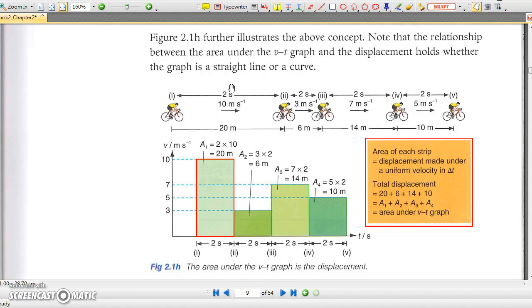In the first 2 seconds, it travels at 10 m/s for 2 seconds, producing a displacement of 10 times 2 equals 20 meters, which equals the area of the first rectangle here.